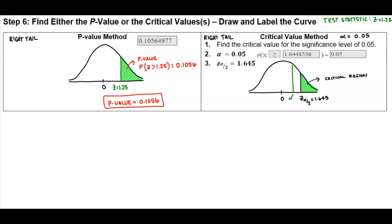So the test statistic, which is z which is equal to 1.25, is the test statistic. Now if you notice, that test statistic is to the left of that critical value and it's not in the critical region, which we'll then use for step number seven.